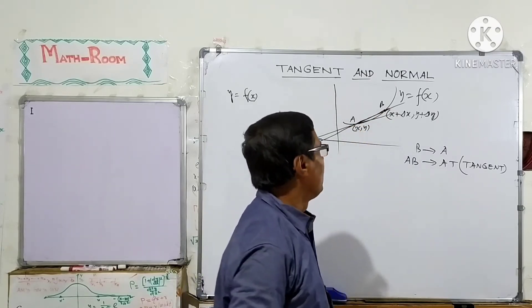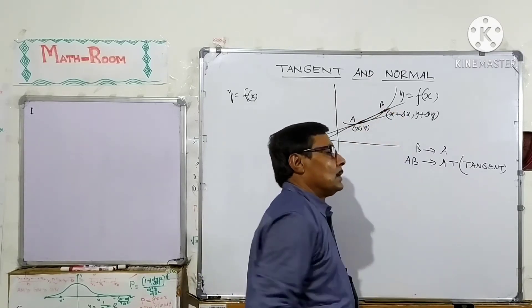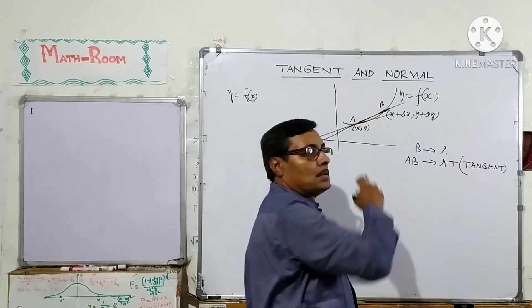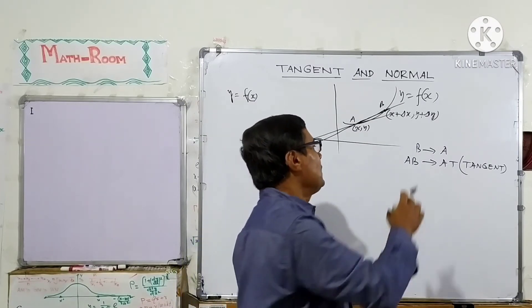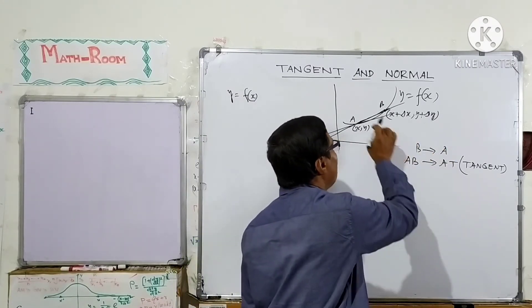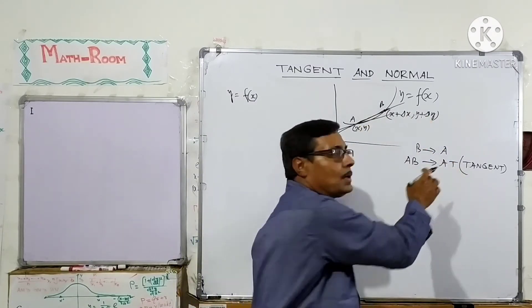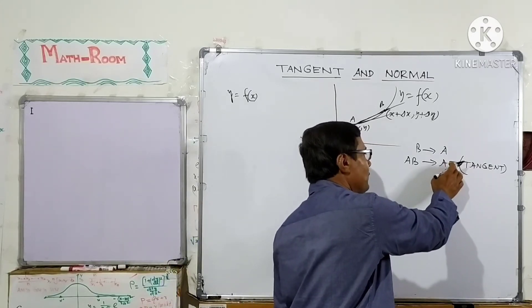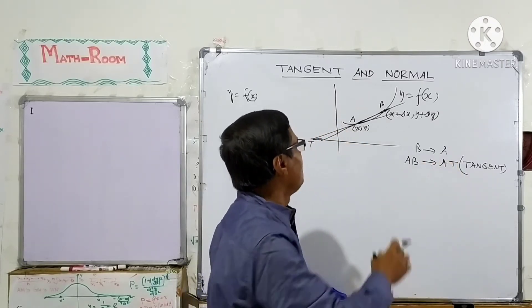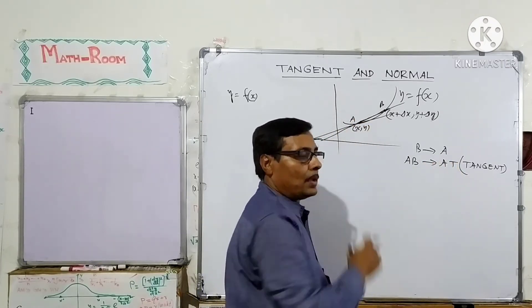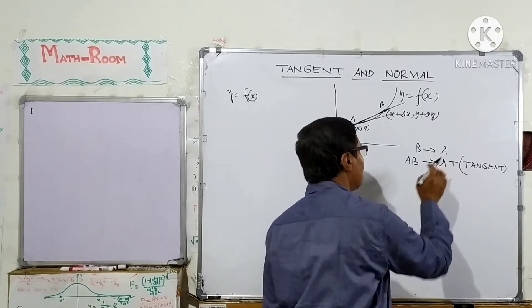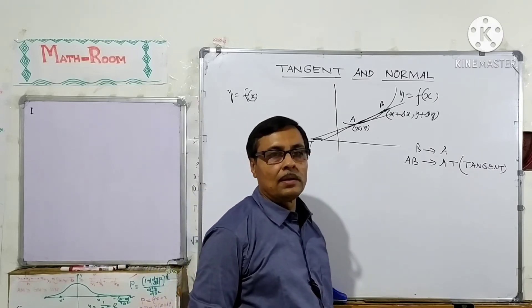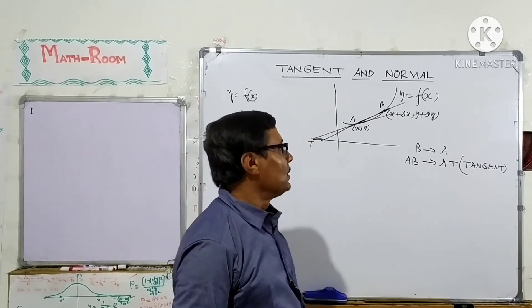When the secant intersects the curve at two points and these two points approach each other, that is B approaches A, then the secant line AB is converted into the tangent line AT, which touches the curve at only one point A. Thus we have discussed the tangent line to any curve y = f(x).